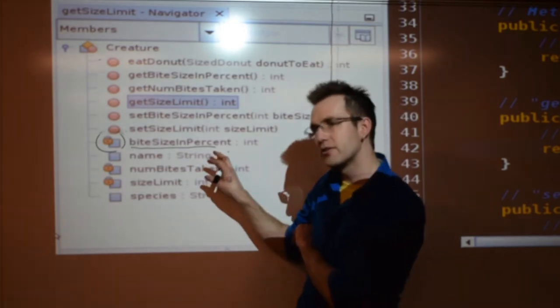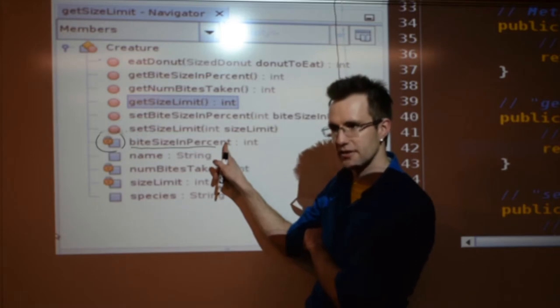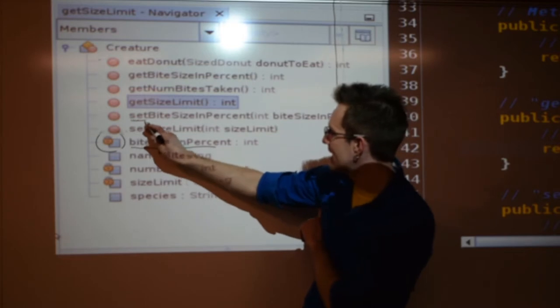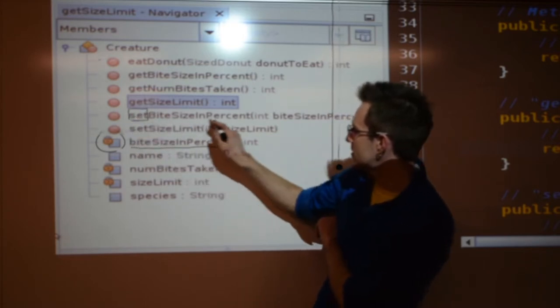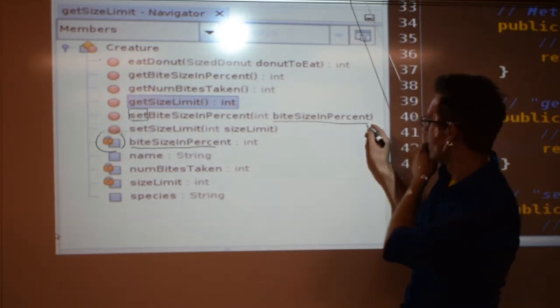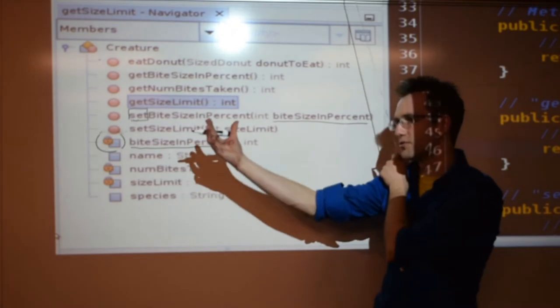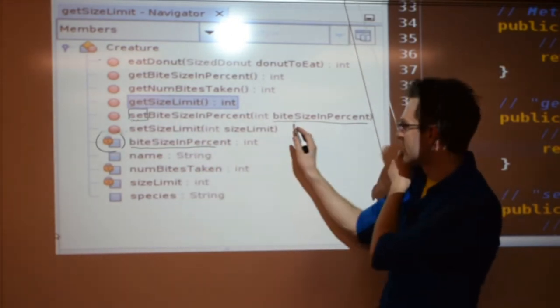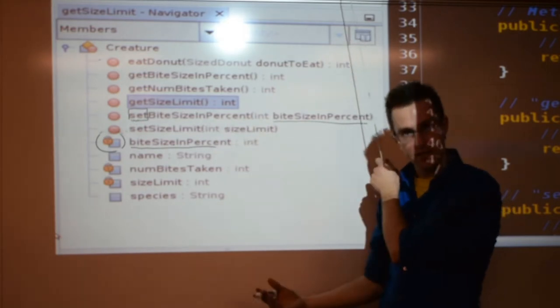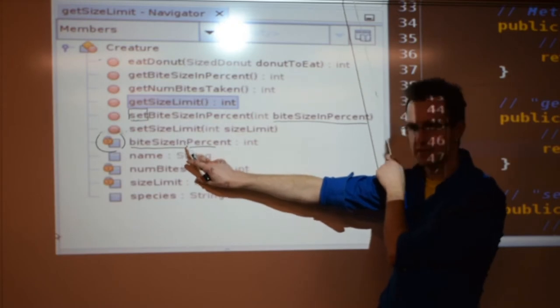I want them to do what? Call a method. Look. Set. Set Bite Size in Percent. What goes into this method? Whatever the bite size is, you want this creature to take. And this method is going to have to be intelligent and do some logic to control when it's going to actually put that value into bite size.